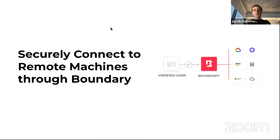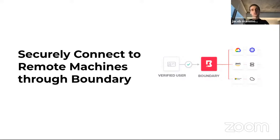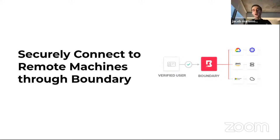One thing I touched on is the concept of a catalog. Part of the vision for Boundary is to leverage Consul, which provides service discovery for your workloads. Boundary can work with Consul to discover new services as they come up, as IP addresses change, or as auto-scaling adds or removes machines. Consul handles the discovery, and then Boundary and Consul work together to ensure every host a verified user sees is in fact what it says it is — and is actually alive and healthy.